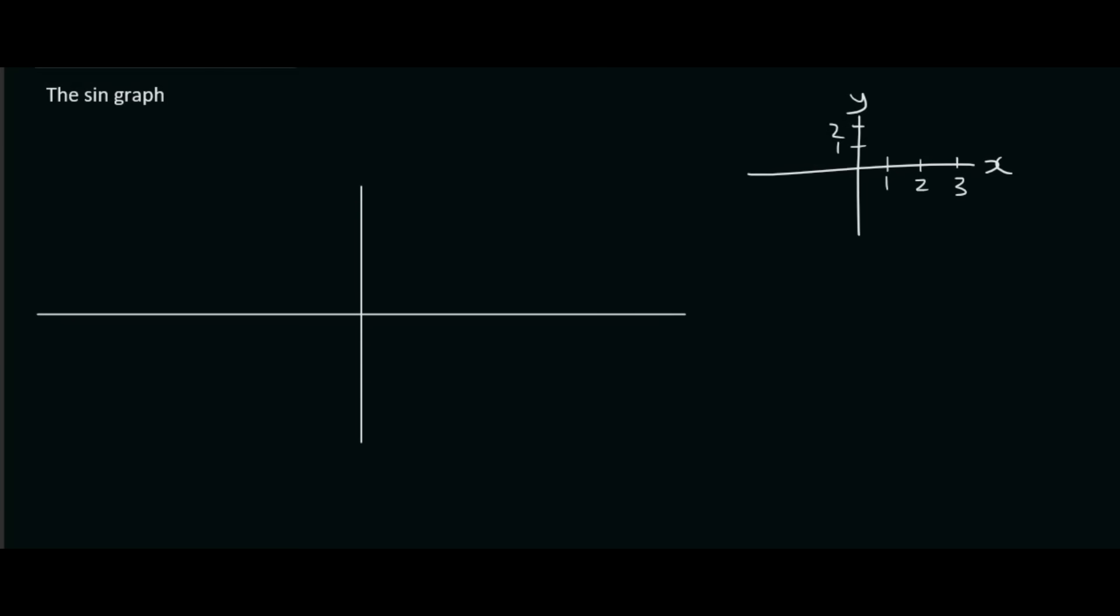On a sine, cosine, and tangent graph, your x-axis is going to be measured in degrees. So you're going to see things like 90 degrees, 180 degrees, 270 degrees, 360. Of course it could go backwards like minus 90, minus 180, minus 270, minus 360.